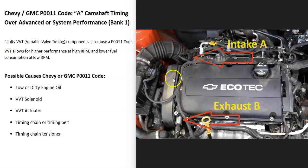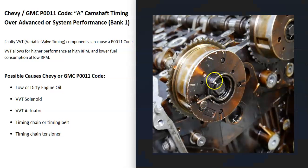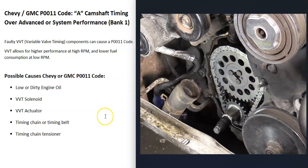Another thing that could cause this problem is going to be the actuators, which are located right up inside the front. This is what the timing chain rides on at the very top. Basically, oil flows through the solenoids into these actuators and helps adjust the timing. These don't usually go bad, but they can fail sometimes, so it's another component that can cause issues.